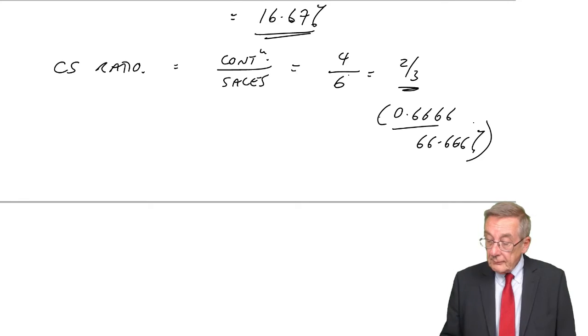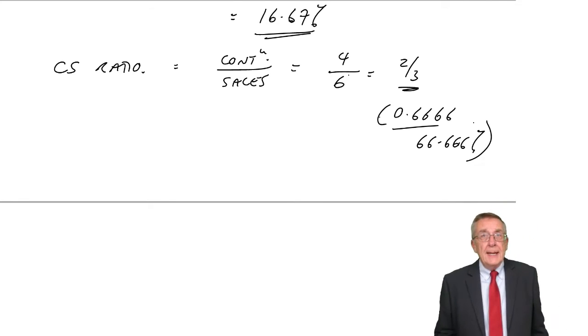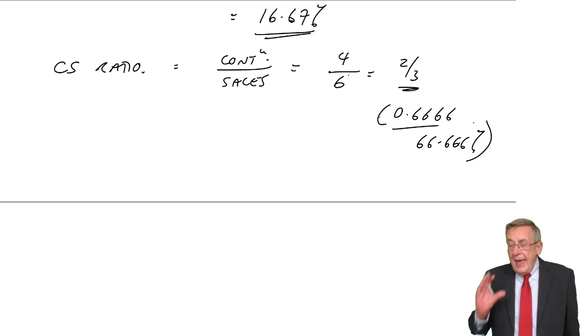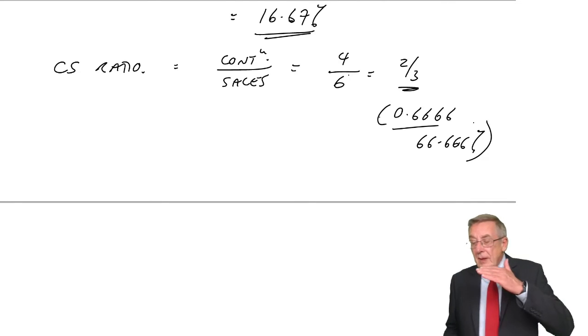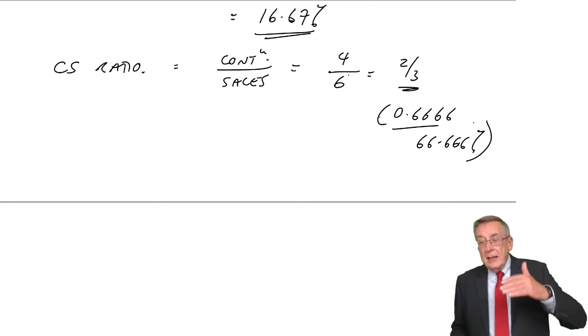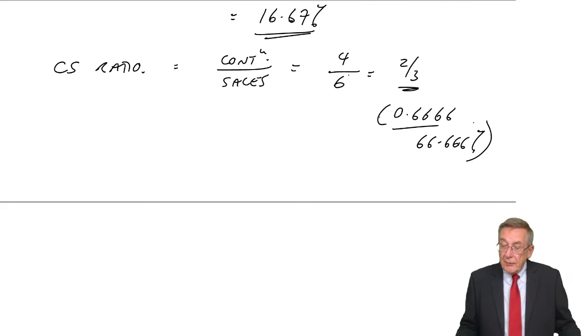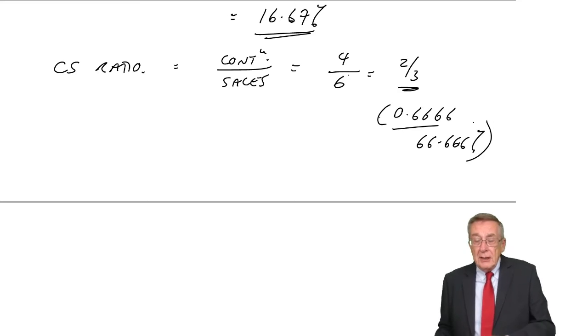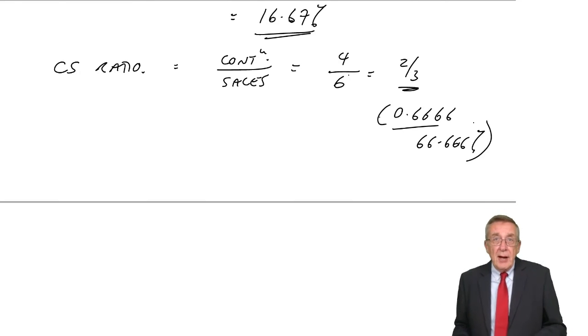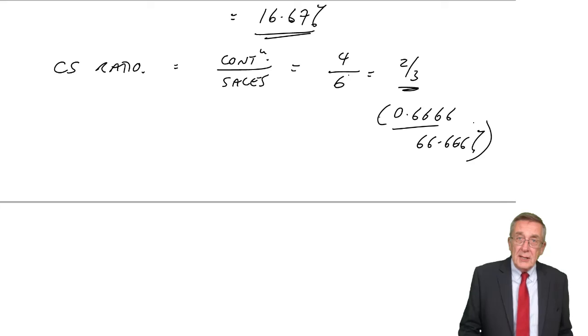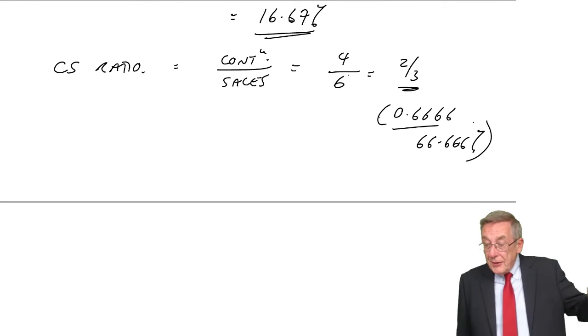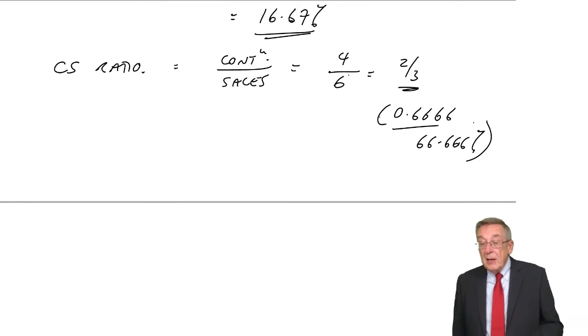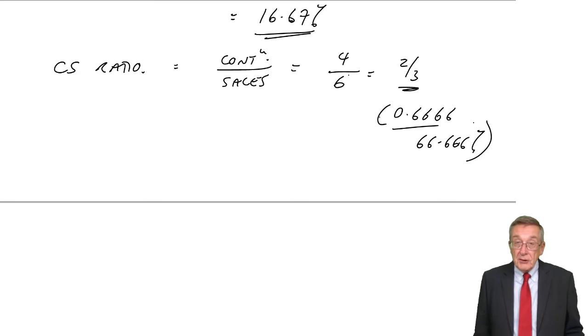But what does it mean? It means, for every unit we sell, we'll make two-thirds profit. So, for every three dollars of revenue, we'll have two dollars of contribution. And it doesn't matter whether I sell one unit or a thousand units. For every three dollars of revenue, we'll make two dollars contribution.